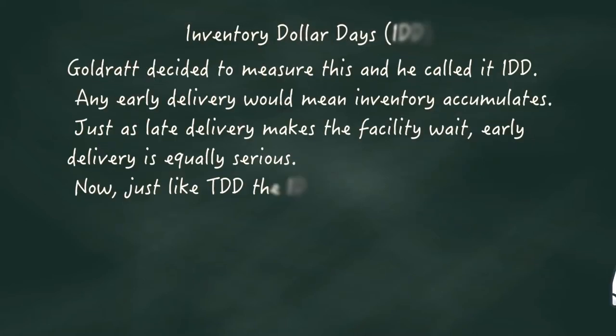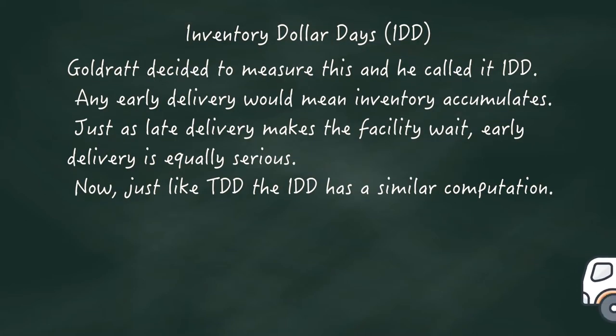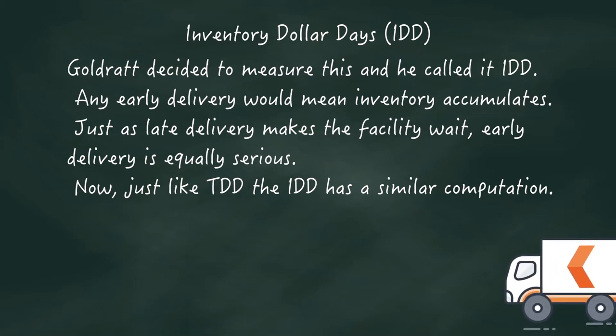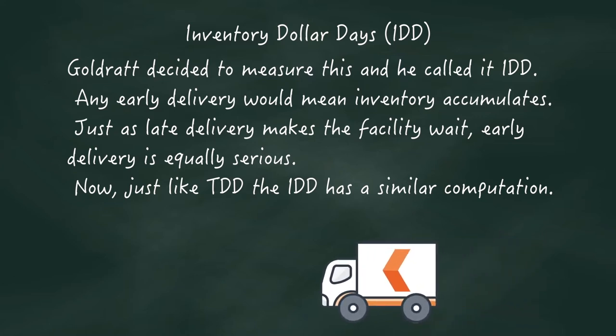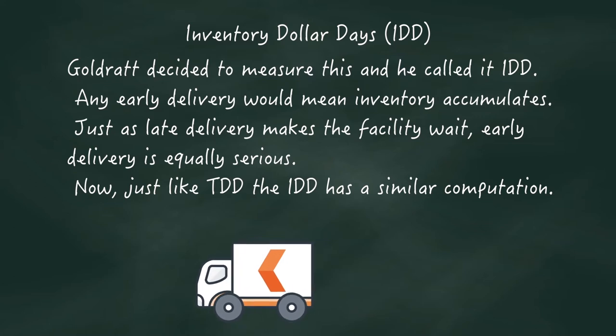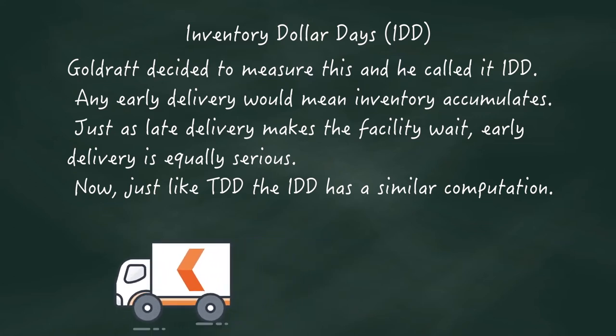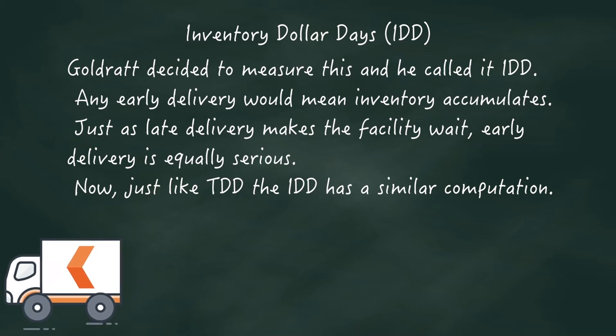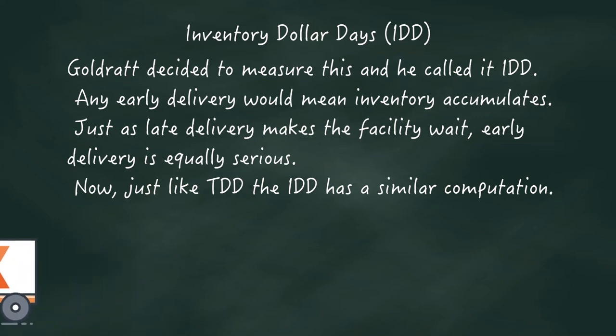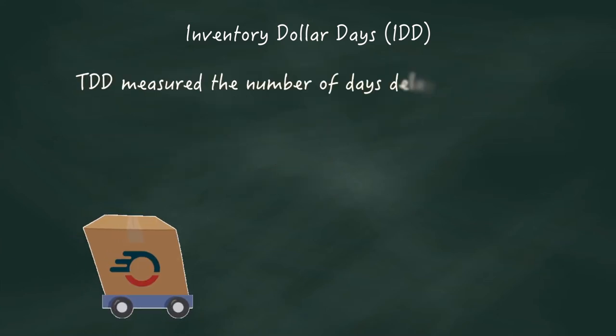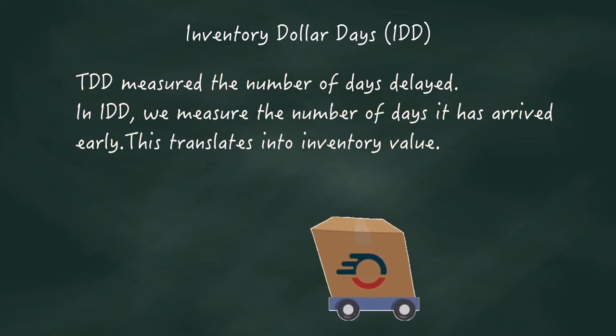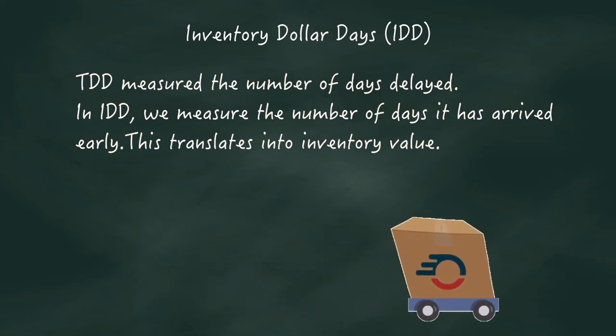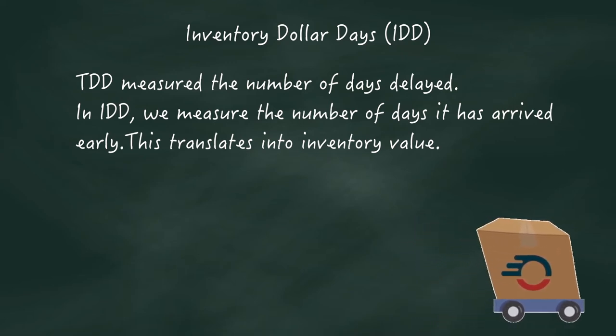So Goldratt decided to measure this and he called it IDD. Any early delivery would mean inventory accumulates. Just as late delivery makes the facility wait, early delivery is equally serious. Just like in TDD, the IDD has a similar computation. TDD measured the number of days delayed. In IDD, we measure the number of days it's arrived early. This translates into inventory value.